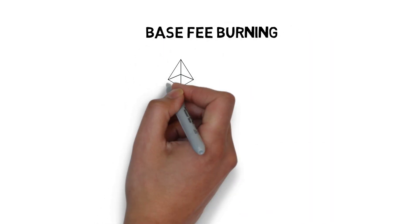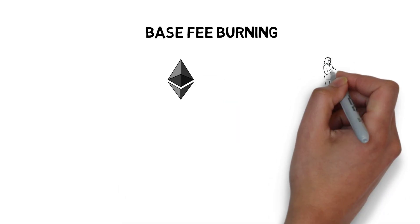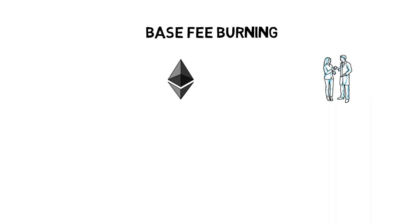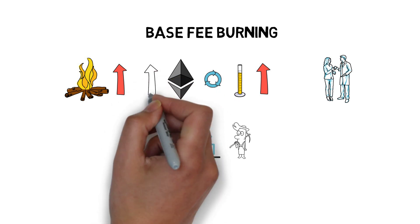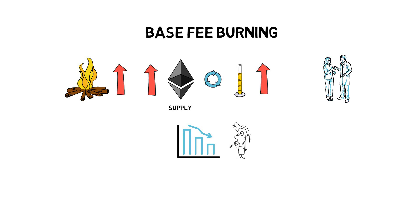The base fee burning also has major implications for the ETH supply, which is why EIP-1559 is very often discussed by ETH investors. Burning the base fee creates an interesting feedback loop between network usage and the ETH supply: more network activity equals more ETH burned, equals less ETH available to be sold on the market by miners, making the already existing ETH more valuable. Burning the base fee essentially rewards users of the network by making their ETH more scarce instead of overpaying miners.